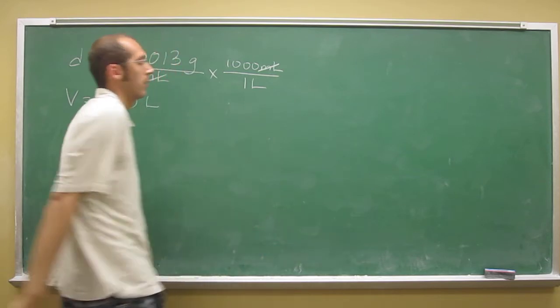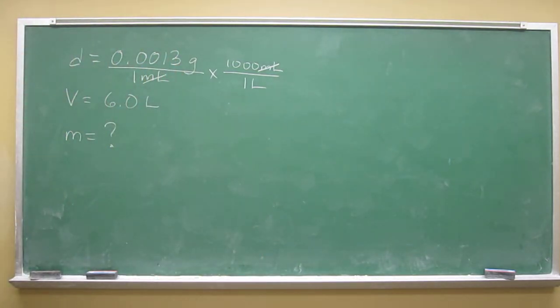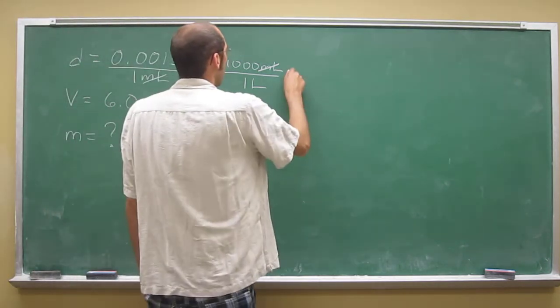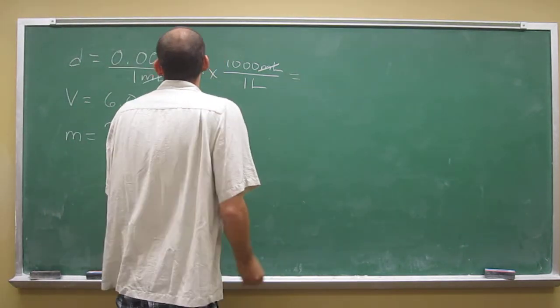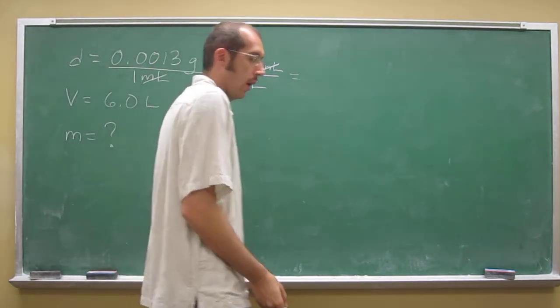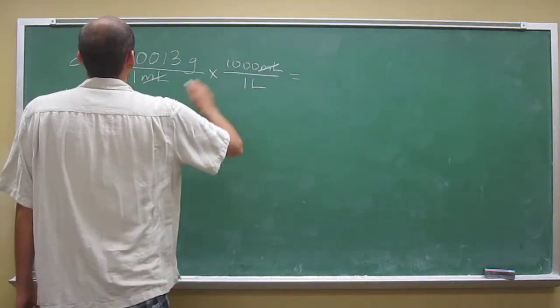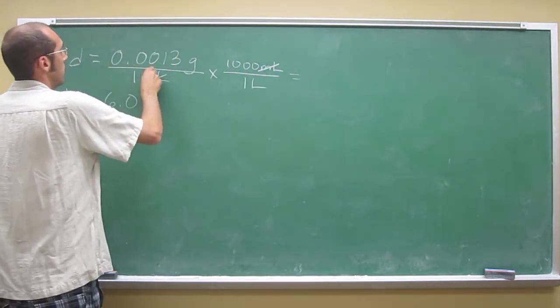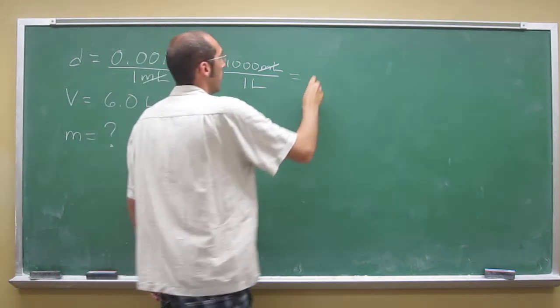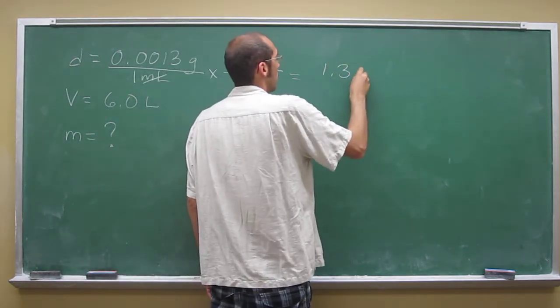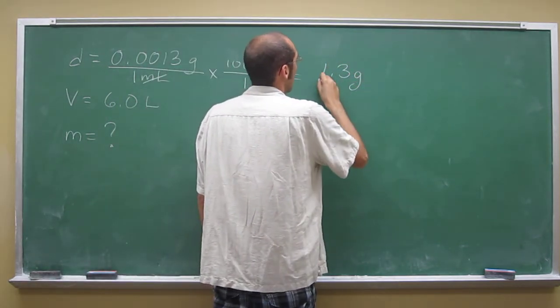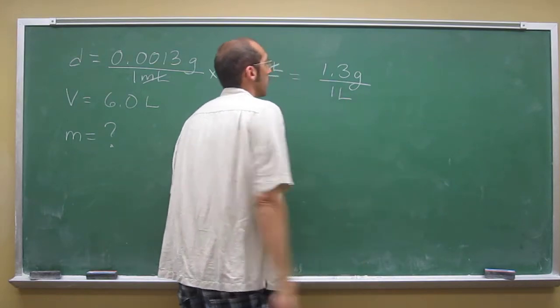So if we do that, remember from our last lecture that milliliters will cancel, how to do dimensional analysis. So all we've got to do is multiply that by 1,000. So 1, 2, 3. So we've got 1.3 grams per one liter is the density.